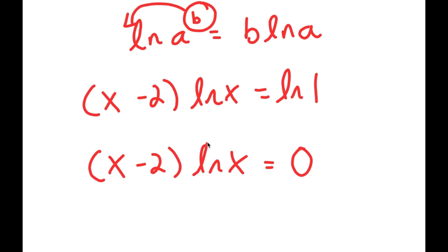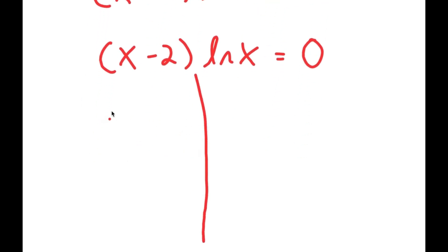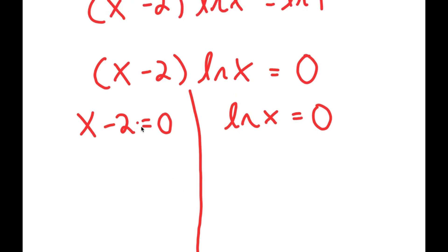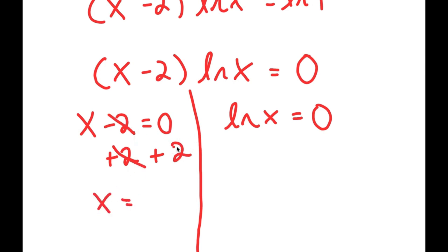From here, I get two equations. The first is x minus 2 is equal to 0. All I have to do is add 2 on both sides — these two cancel out and I'm left with x is equal to 0 plus 2, which is 2.